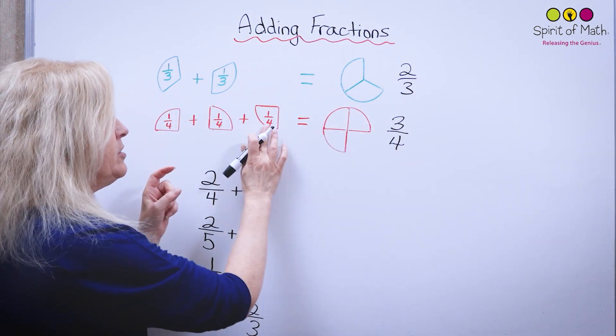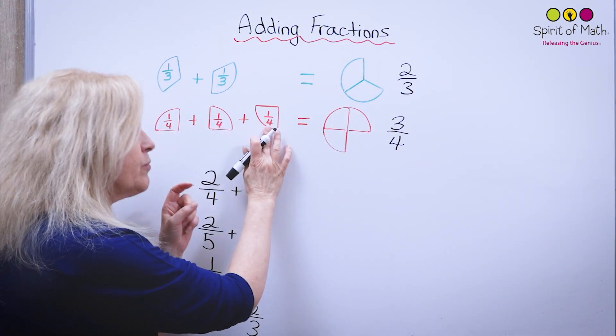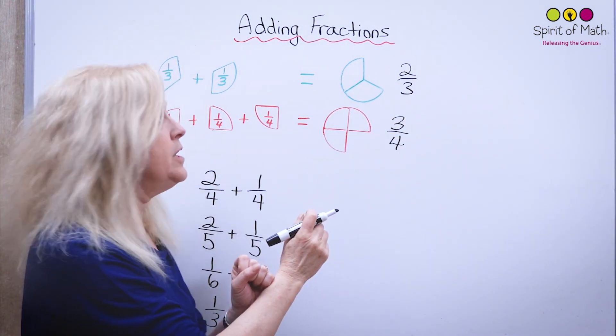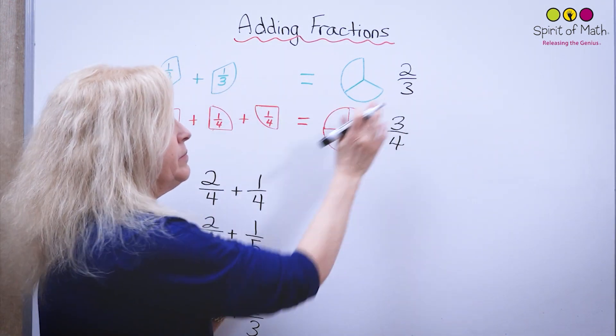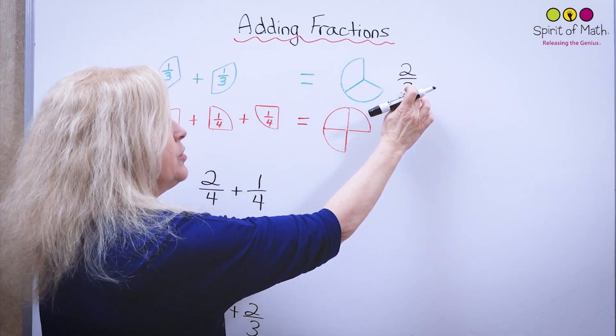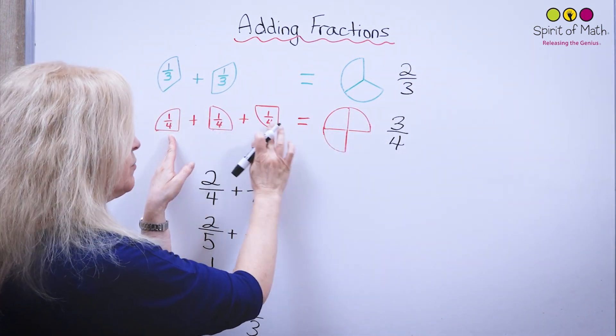Notice the denominator stays the same because you have three of these things, so you have three quarters. You didn't add the bottom numbers. You just said you have two of these things like two thirds, and here you have three quarters.